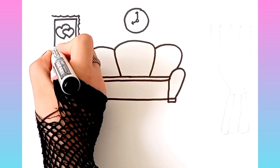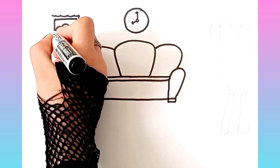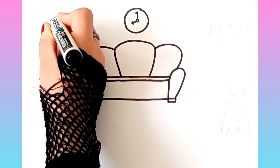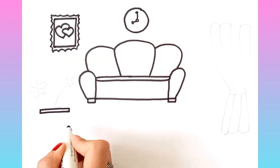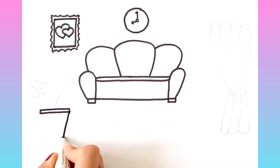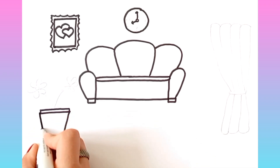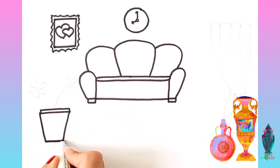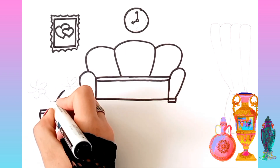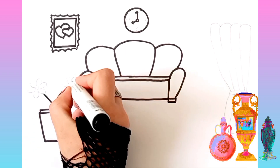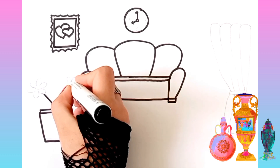L is for lion, l, l, lion. M is for mat, m, m, mat.